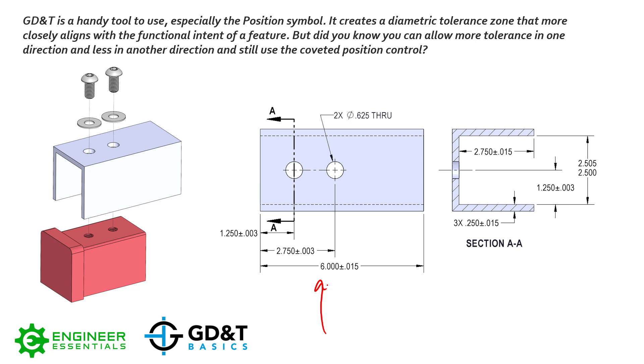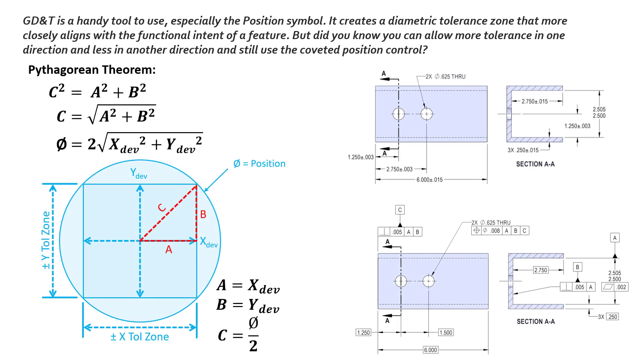You gain the added benefits of those round tolerance zones. How you convert that is a quick, easy calculation using the Pythagorean theorem. For those of you that don't want to use the math, I don't blame you. We have a position conversion calculator on our website, as well as we hand out the position conversion chart for quick reference for our students.